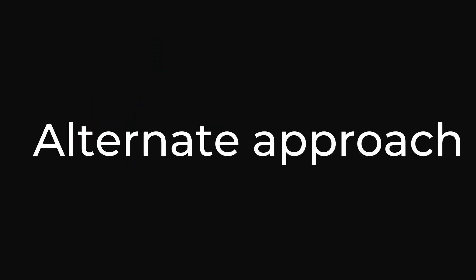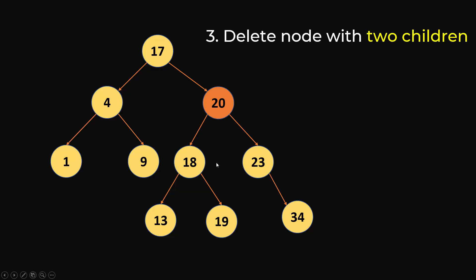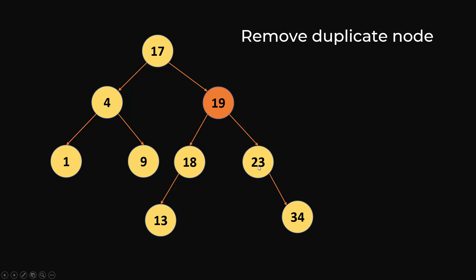There is an alternate approach — you can also look into the left subtree. Let's say again you are trying to delete 20, which is a node with two children. The second approach is to find the maximum from the left subtree. The left subtree is 18, 13, 19, and the maximum is 19. So you copy 19 to the current node and then delete 19 from the left subtree. If you take the maximum value from the left subtree, you guarantee that all leftover elements in the left subtree are still less than this value, since it was previously the maximum.